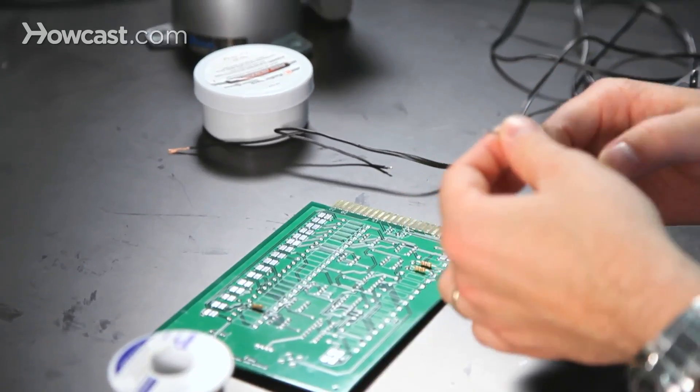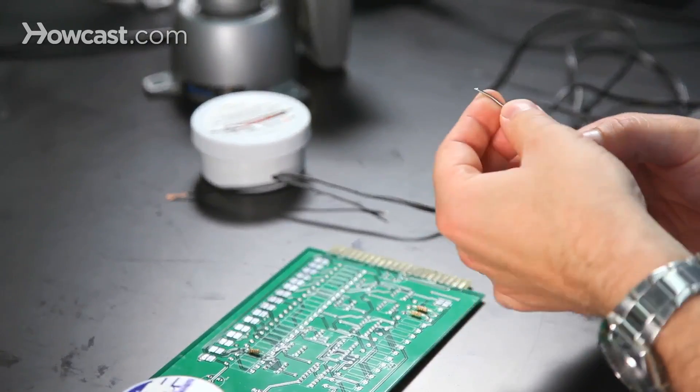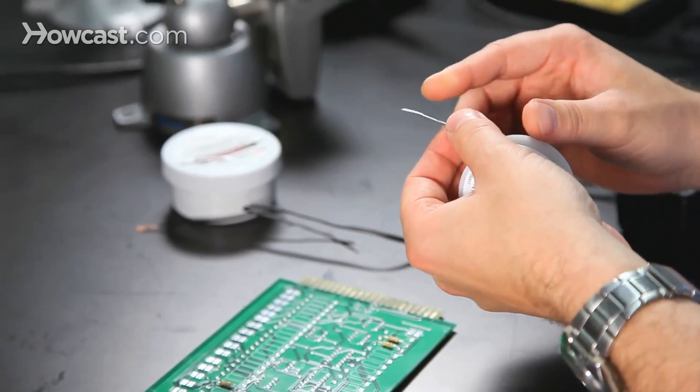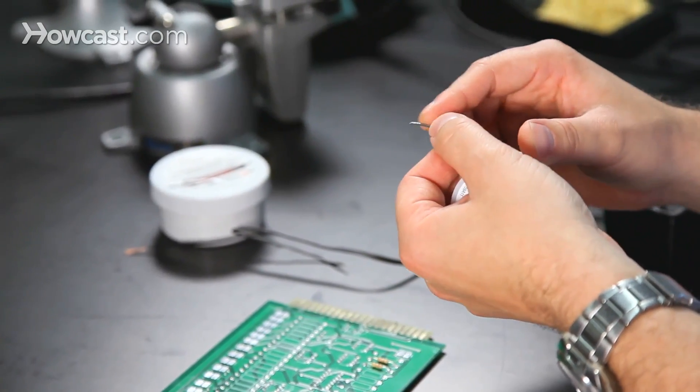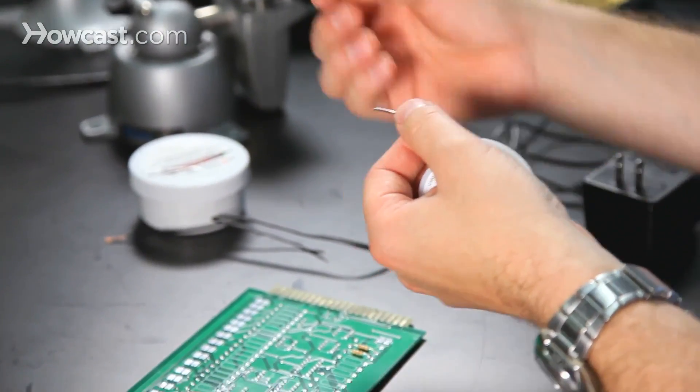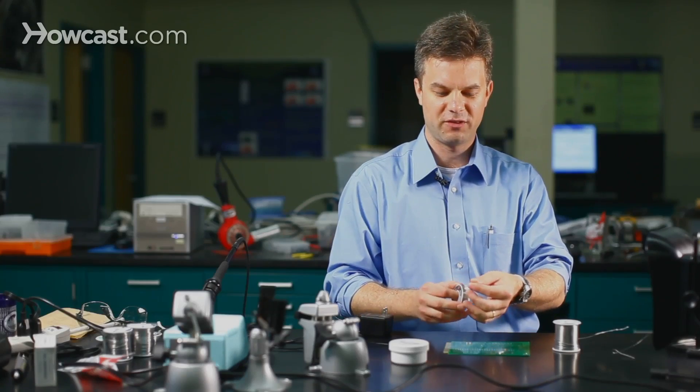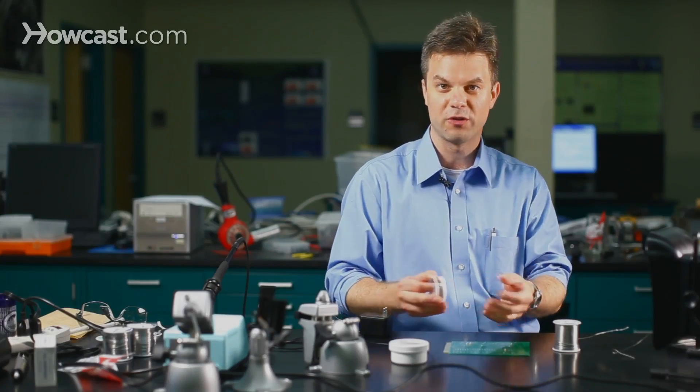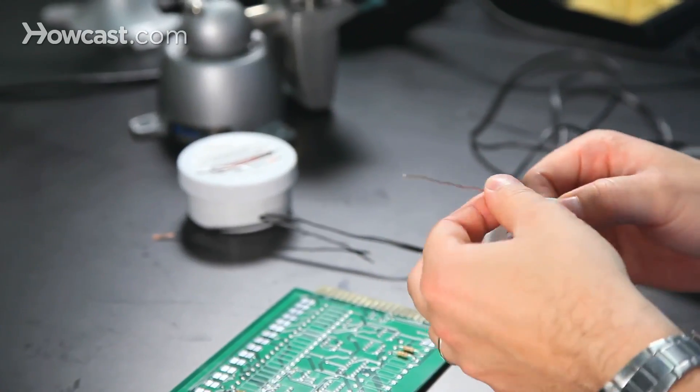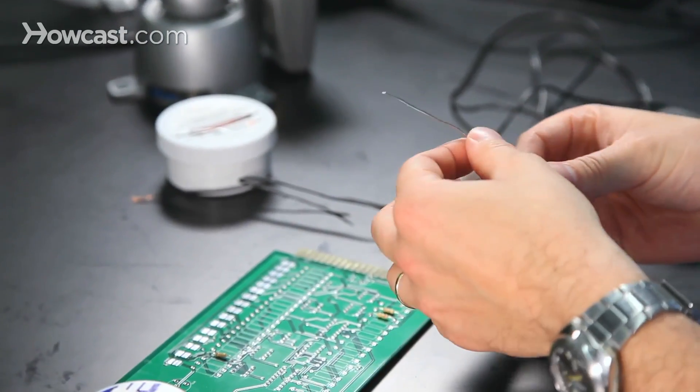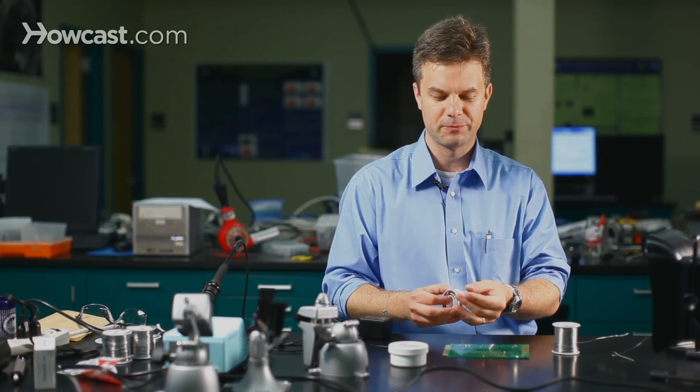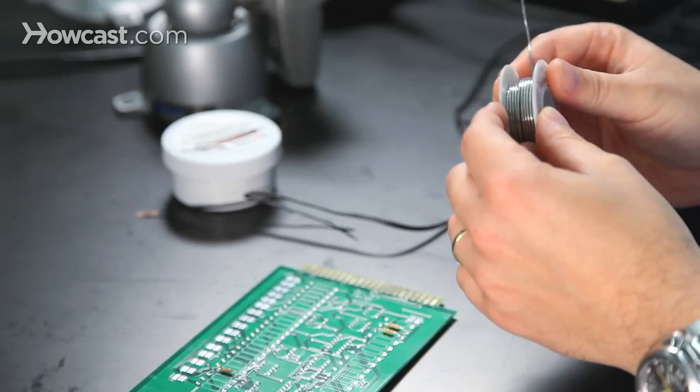Now with rosin core solder, you may run into different types. The most common are perhaps the single core, such as this, which has a single cylinder of flux in the center of the solder. However, more advanced types of solder may have more than one core, and in these cases they may deliver a little bit more flux and you may be able to work with parts that are a little bit more dirty. They may deliver it more evenly. But in general, that's a specialized type of solder which is not really that common. You're most likely to run into the single rosin core solder, such as this.